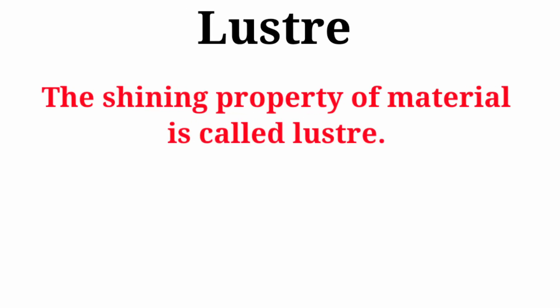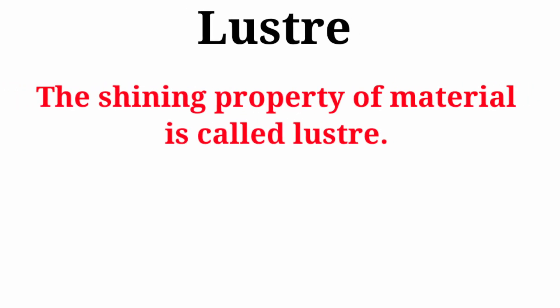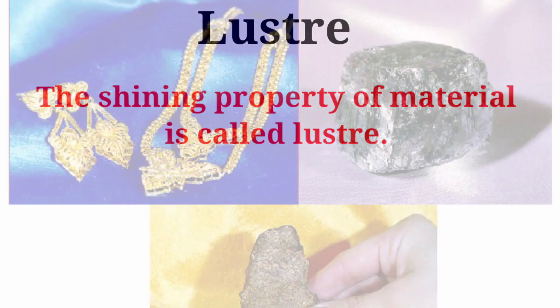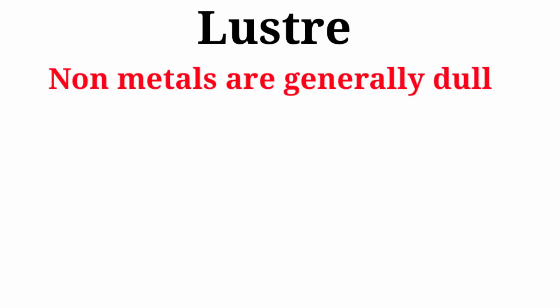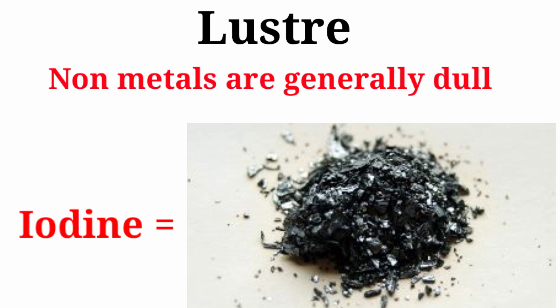And in non-metals, bromine is the only non-metal which is a liquid at room temperature. Luster: The shining property of a material is known as luster. Metals are lustrous, and gold and silver have so much luster that they are used for making jewelleries. Non-metals are generally dull, but the exception is iodine, which is a non-metal and is highly lustrous.